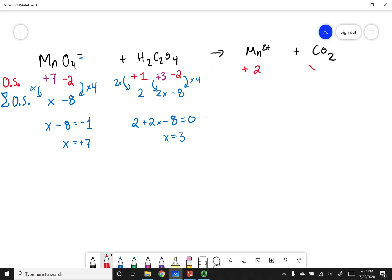Carbon has a variable oxidation state, oxygen minus 2. There is only one carbon, so x. There's two oxygens right here, so minus 4. So x minus 4 equals 0. So x here equals plus 4.